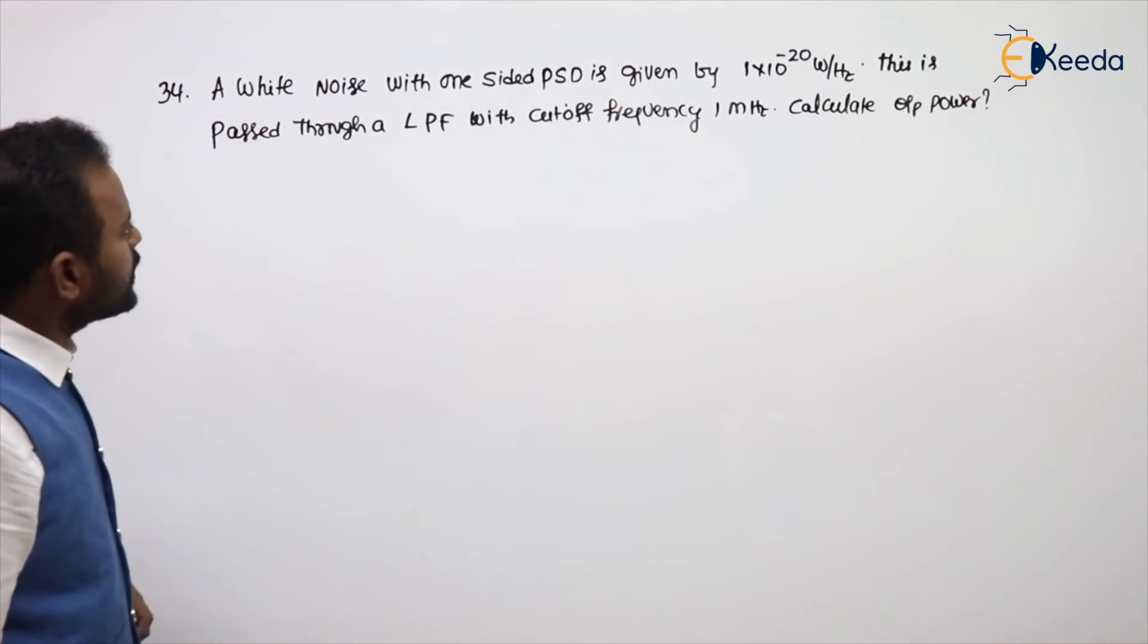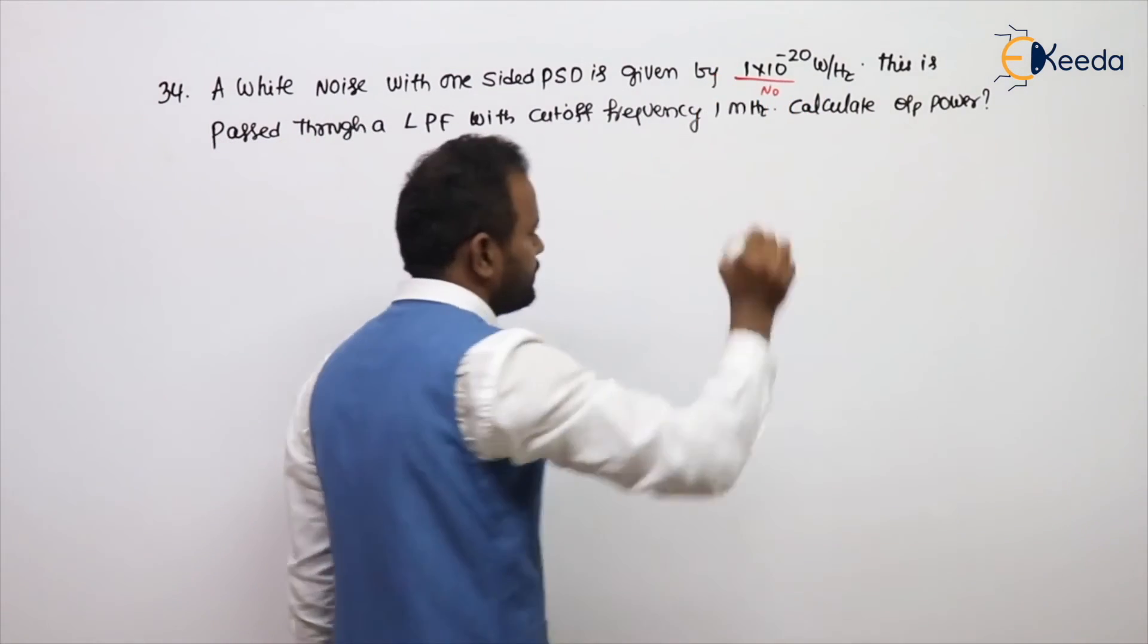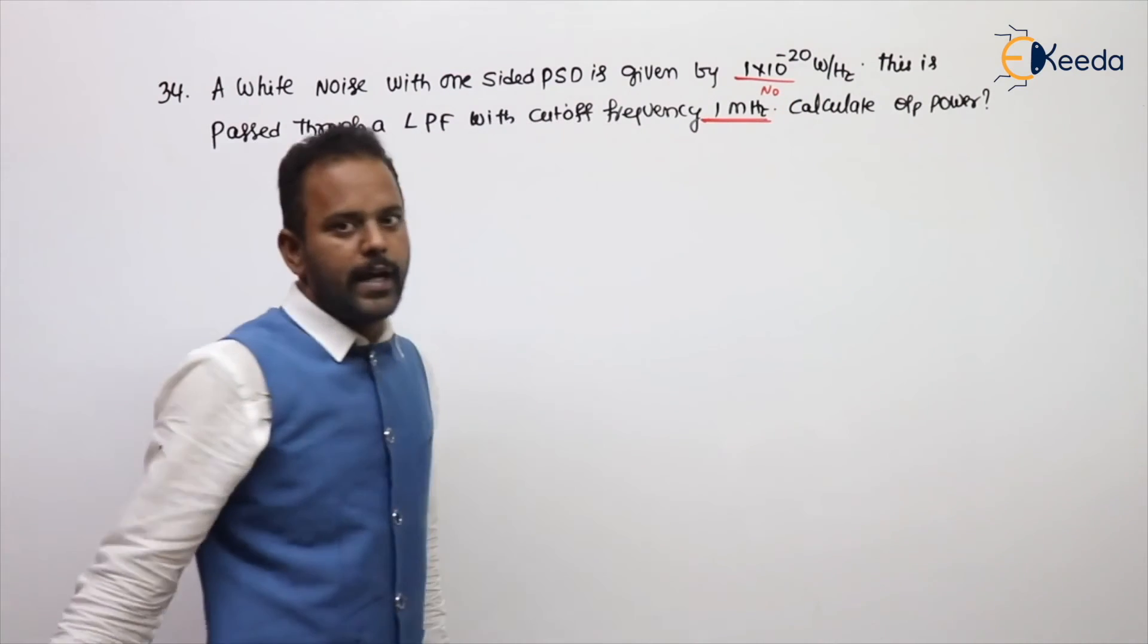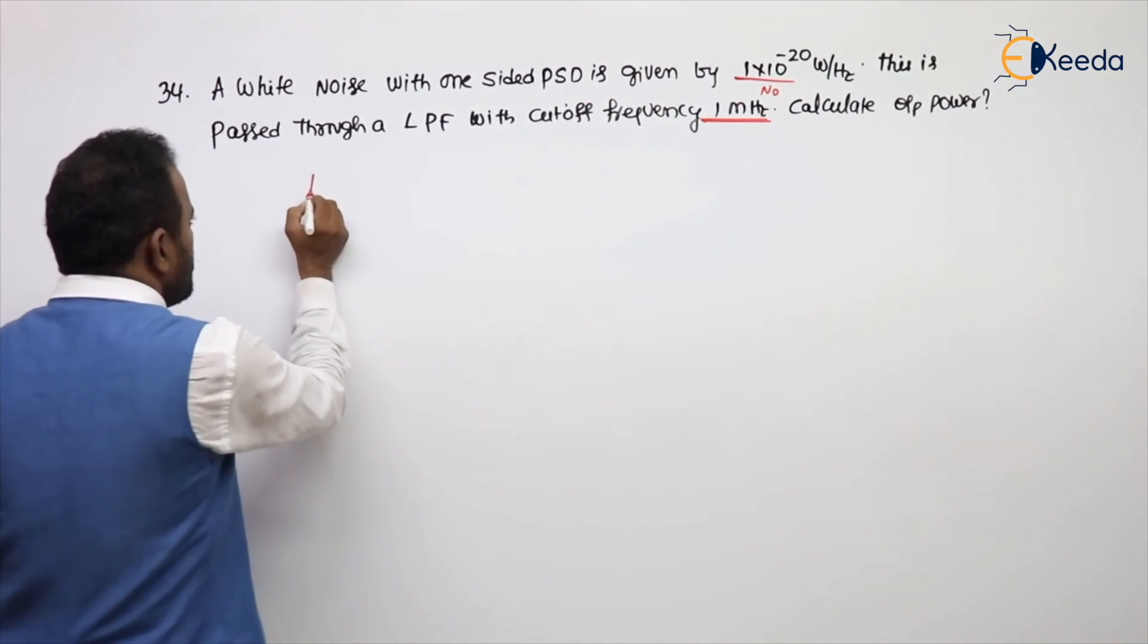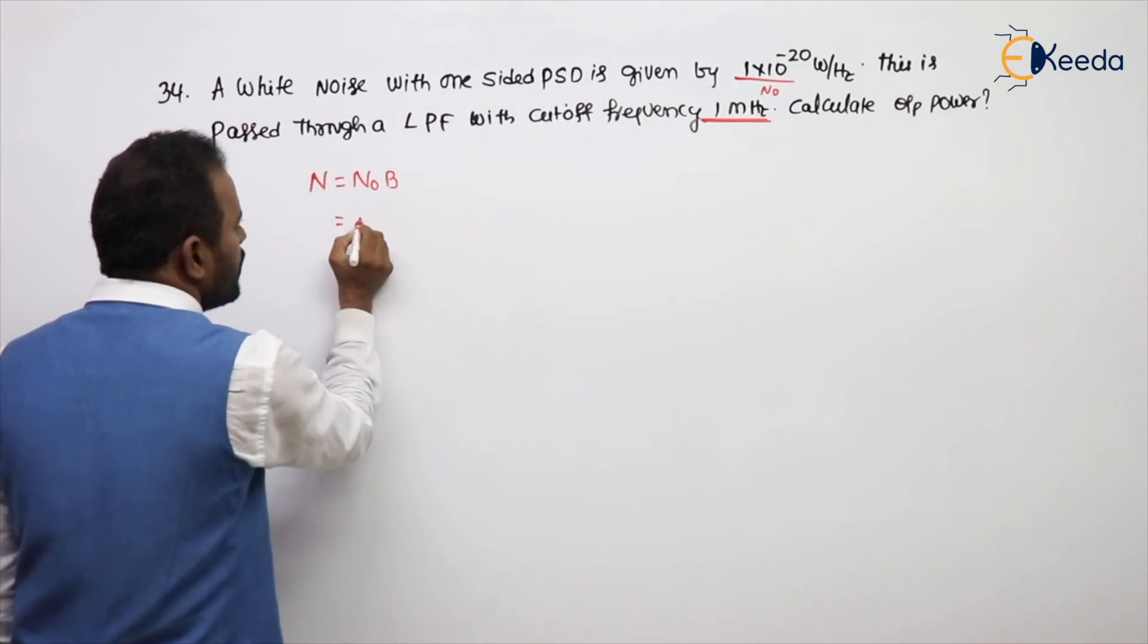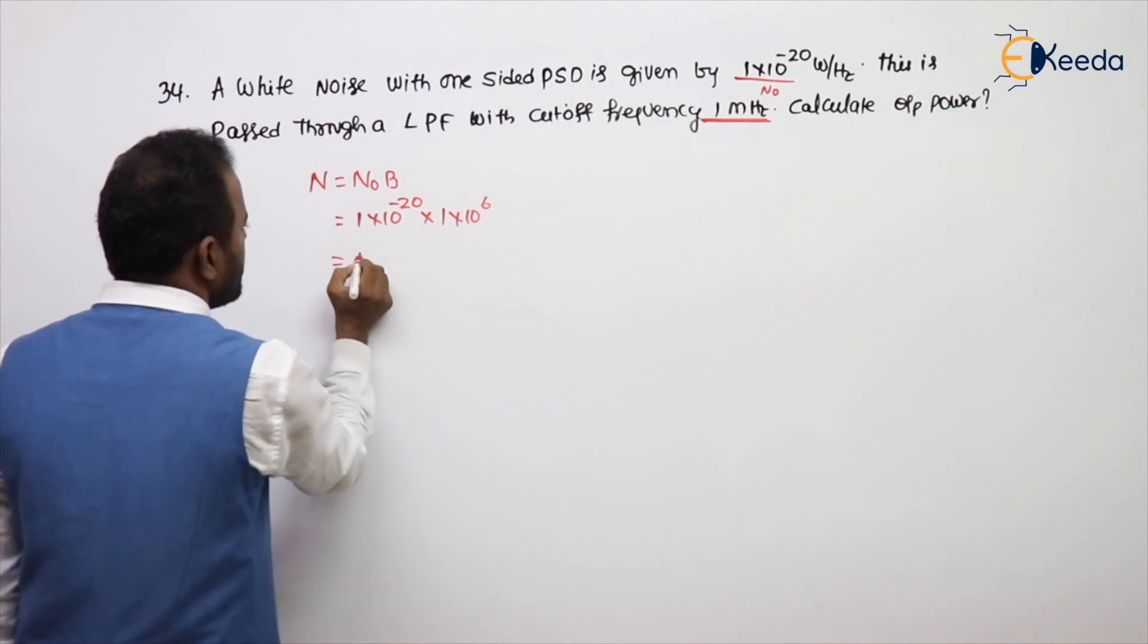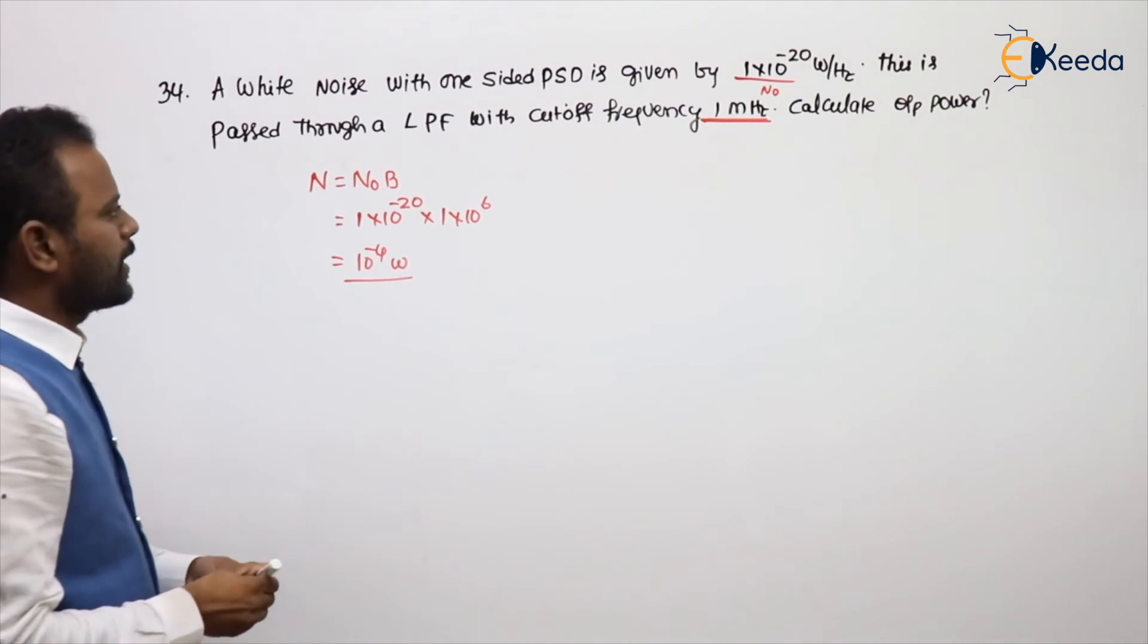See the next problem. A white noise with one-sided PSD - one-sided means given value itself is N0. This is passed through LPF with cutoff frequency 1 MHz. Calculate output power. We know noise power N equal to N0 into B. What is N0 value? They given 1 into 10 power minus 20. What is the bandwidth? 1 into 10 power 6. That is nothing but 10 power minus 14 watts. Simple.